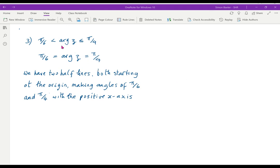The argument has to be bigger than pi by 6, less than or equal to pi by 4. We want the area between the two lines. We don't want to include arg z is pi by 6, and we do want to include arg z is pi by 4.